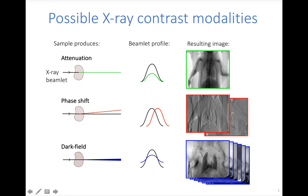We can capture these three modalities using a range of setups. This beamlet could be seen through a phase or attenuation grating, we could directly resolve the beamlet and see how it moves and spreads, it could be analysed using a grating interferometer or edge illumination, or the beamlet could be a speckle in speckle-based phase contrast imaging.